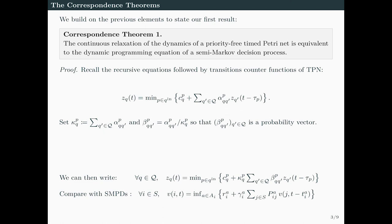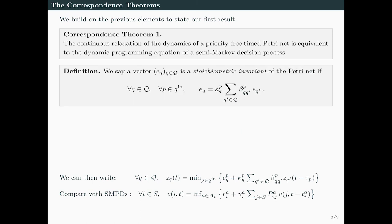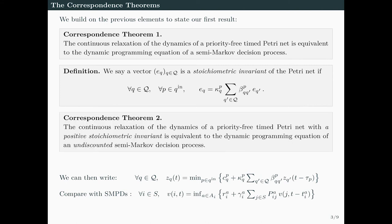To prove it, we re-use the general form of the counter equations and slightly adapt the α coefficients by introducing β coefficients who sum to 1, so β is a probability vector. Then by comparison with SMDPs, you can see we have an exact correspondence between ZQ(t) and v(i,t). We can do even better by introducing a coefficient κ corresponding to a discount factor. We say the vector e is a stoichiometric invariant of the Petri net if it satisfies this equality, and we can refine the theorem: the continuous relaxation of priority-free time Petri nets with a positive stoichiometric invariant is equivalent to the dynamic programming equation of a non-discounted SMDP.